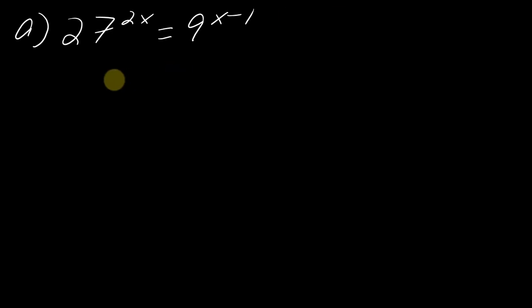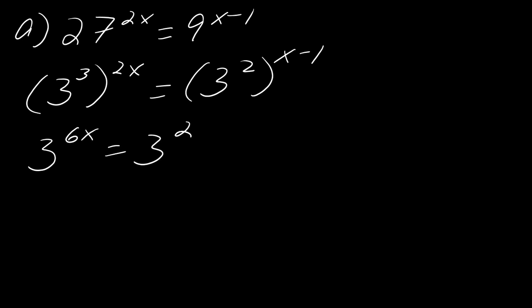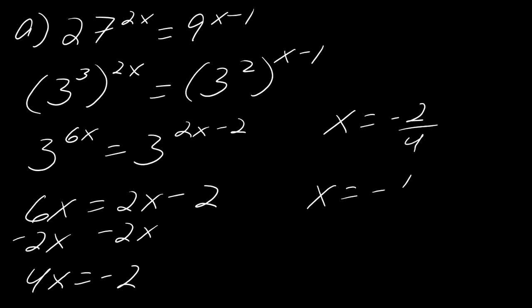Okay, so this is the same deal where I have to rewrite both sides with its own base. So in this case, the base would be 3. So this will be 3 to the 3rd to the 2x equals 3 squared to the x minus 1. And so then I'm left with 3 to the 6x equals 3 to the 2x minus 2. And then I can just set 6x equal to 2x minus 2. So then I can subtract off the 2x to get 4x equals negative 2. And if I divide that by 4, I will get that x is just equal to negative 1 half. So that would be my solution in this case.